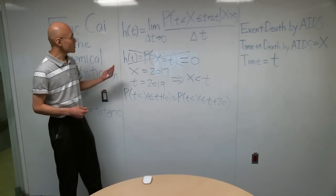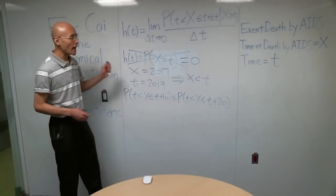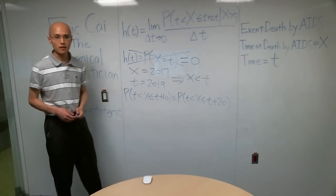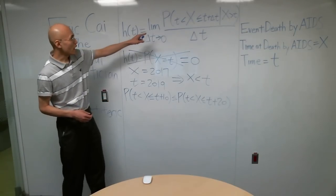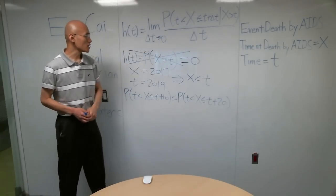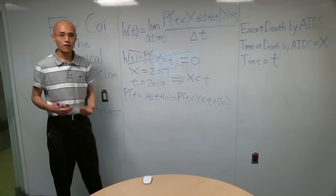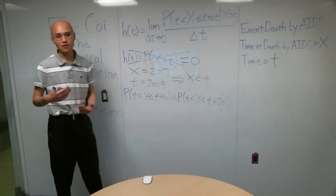So that is the definition of the hazard function. Now it's important to note that the hazard is not a probability. That is a probability in the numerator, but when that divides by delta T, it could get bigger than one, which of course violates one of the Kolmogorov axioms of probability.